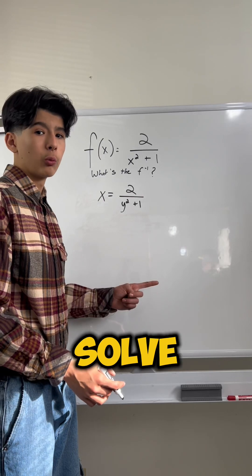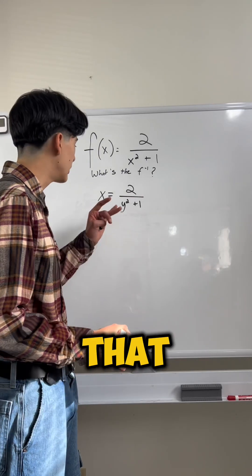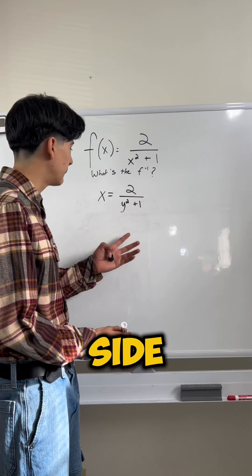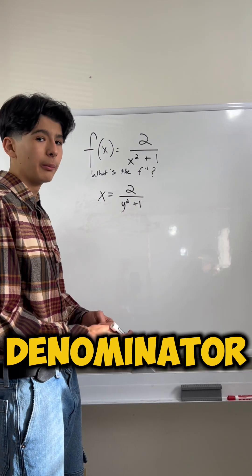Now, all we have to do is solve for y. We have to isolate it so that we know what the inverse function is. So, we can multiply each side by y squared plus 1 to get rid of this denominator.